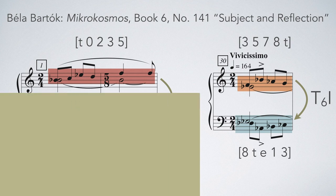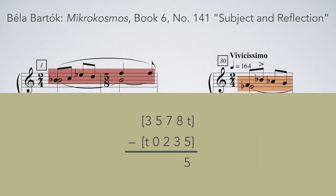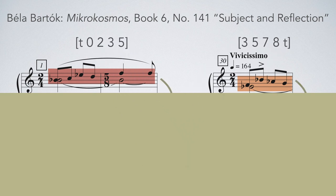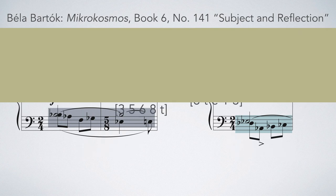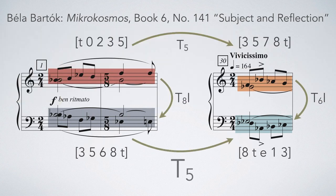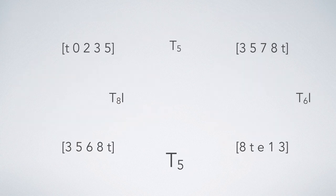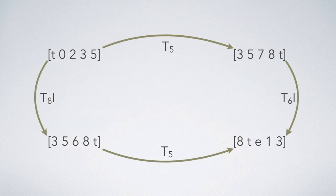But it doesn't stop there. The two sets in the right hand also bear a relationship with one another, T5. And the two sets in the left hand bear the same T5 relationship. Okay, so what does all this mean? It means that these four sets all share the same collection of intervals.